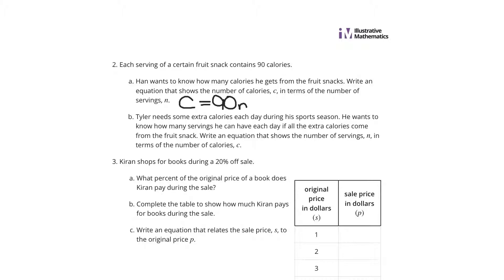So 1 serving would be 90 times 1 — 90 calories. 2 servings would be 90 times 2 — 180 calories. Now, Tyler needs some extra calories each day during his sports season. He wants to know how many servings he can have each day if all the calories come from the fruit snack.